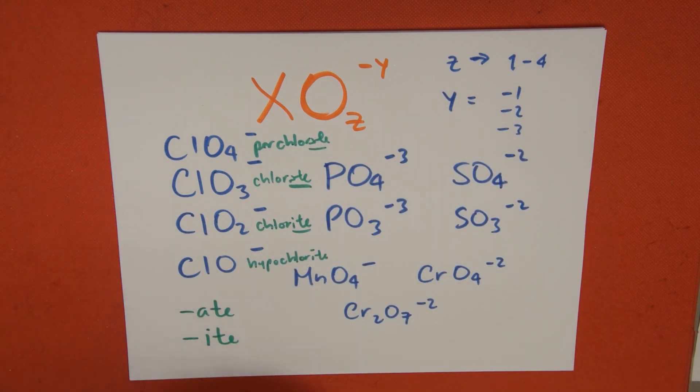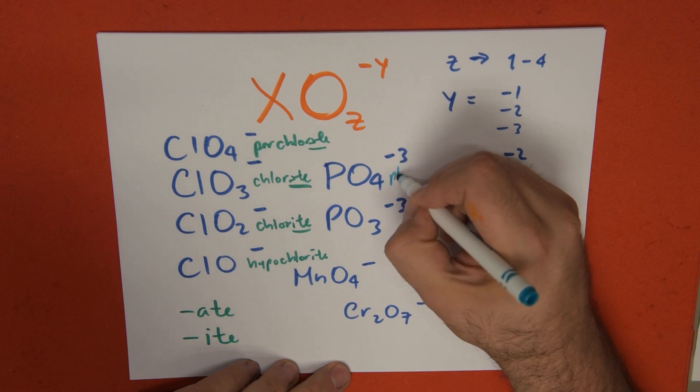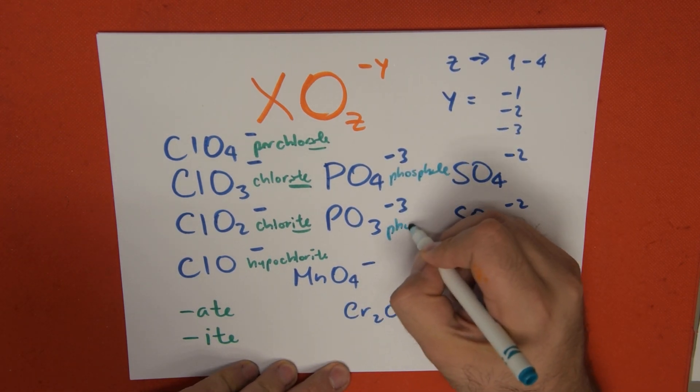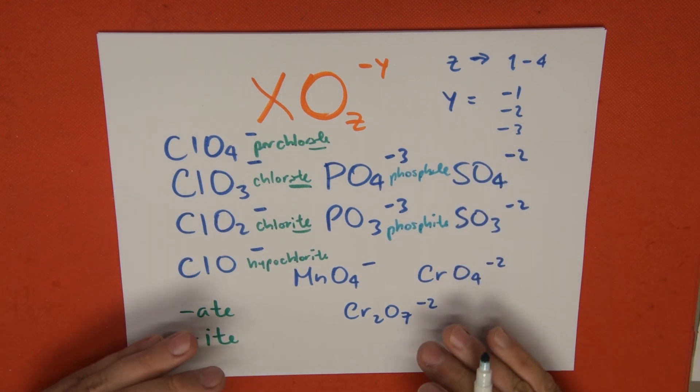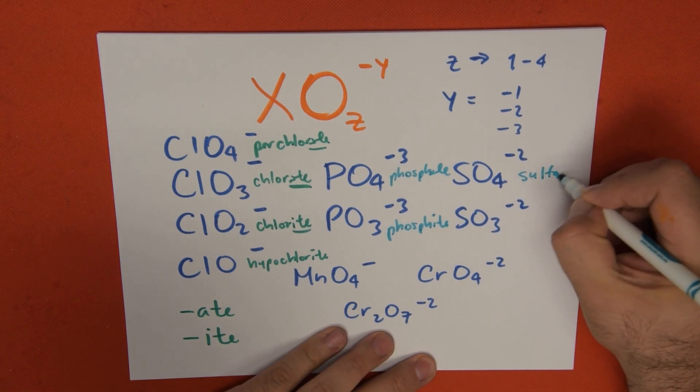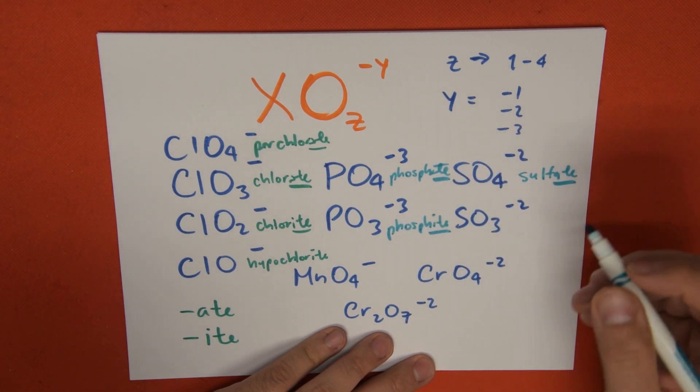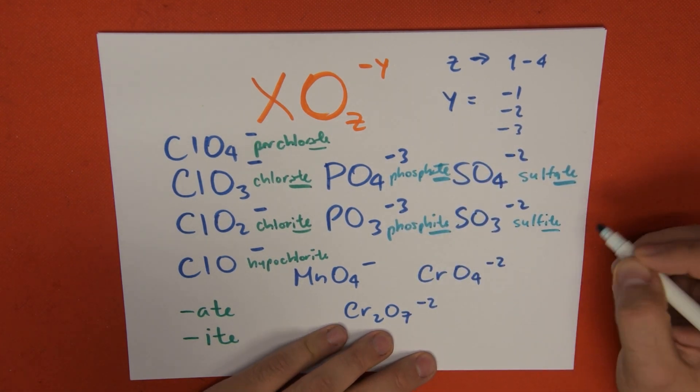For example, these two, that there's only two of them, the higher one, the one that has more oxygen, is going to be -ate, making this one phosphate. And the one with less oxygen is going to be called phosphite. Same example, SO4 is going to be sulf-ate. And this one with three oxygen atoms is going to be called sulfite.